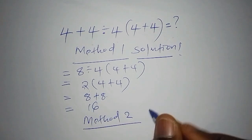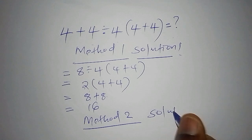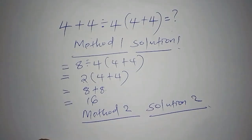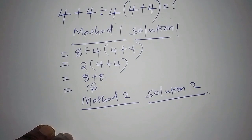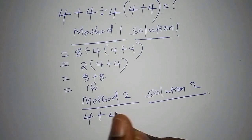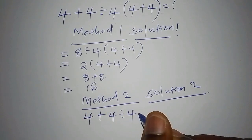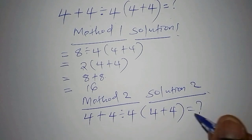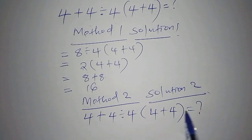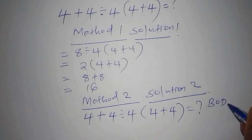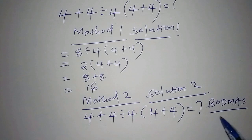That is the end of Method One. Let's now move to Method Two. Under Method Two, Solution Two — let's look at Method Two as the last method. We still have the same problem: four plus four, divided by four, multiplied by bracket four plus four. Now under Method Two, I want to bring up something called BODMAS.